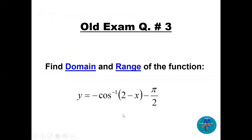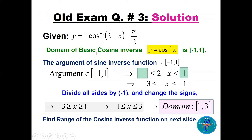Question three: find the domain and range of y = −cosine inverse(2 − x) − π/2. For the basic cosine inverse y = cos⁻¹(x), the domain is [−1, 1]. Whatever the argument is — here it is (2 − x) — we set that argument between −1 and 1.